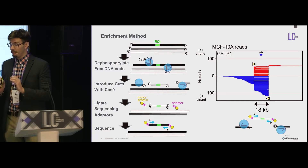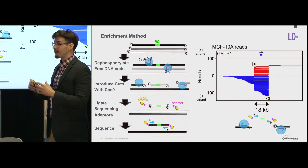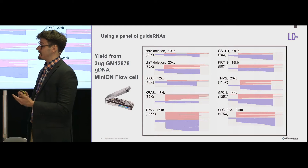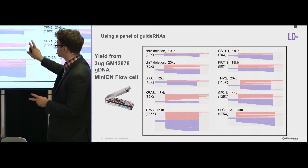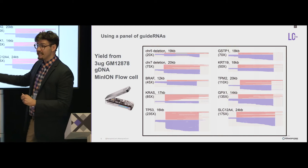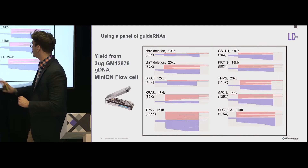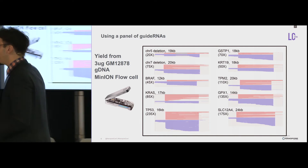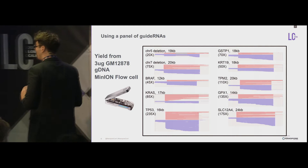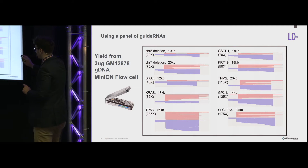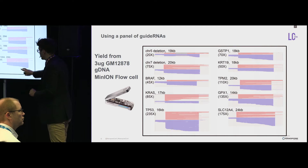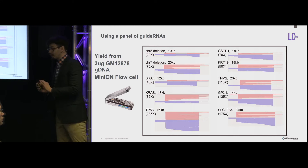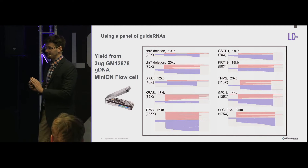We used this method to design a panel of regions of interest — 10 sites selected for structural variation, three cancer driver genes (RAS, RAF, and TP53), as well as 10 genes for methylation analysis. The coverage data from a MinION flow cell ranged from a lowest of 20X to a highest of 235X at the TP53 site, starting with three micrograms and using the GM12878 cell line.